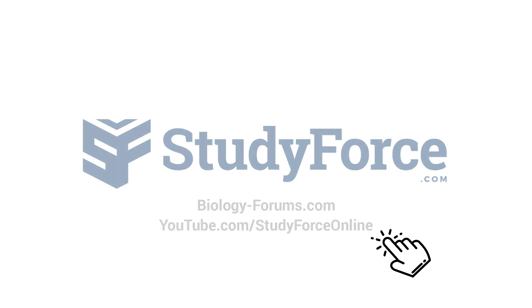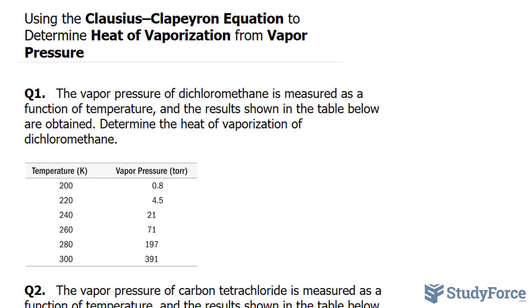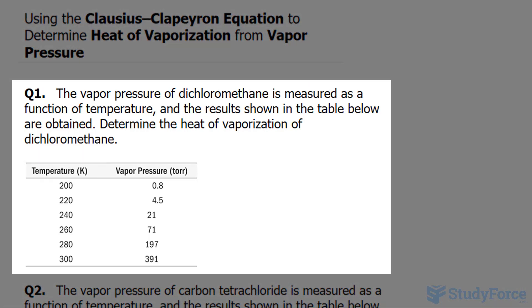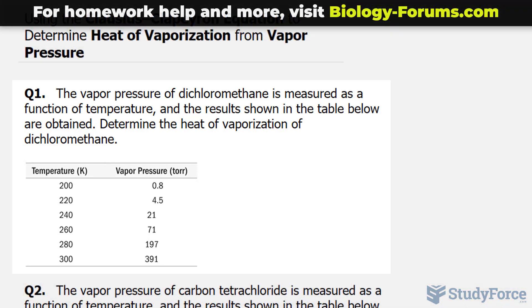In this lesson, we'll be using the Clausius-Clapeyron equation to determine the heat of vaporization from vapor pressure. The first of two questions reads: The vapor pressure of dichloromethane is measured as a function of temperature and the results shown in the table below are obtained. Determine the heat of vaporization of dichloromethane.